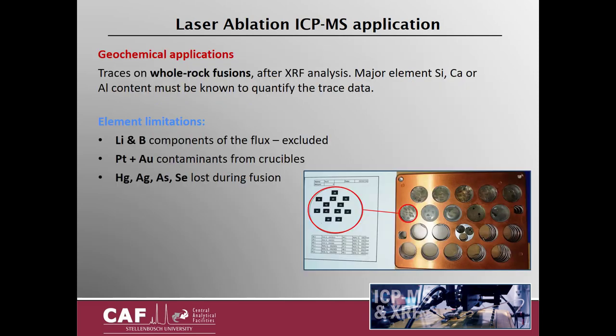Looking at geochemical applications, we did trace analysis on whole rock fusions after majors was measured by XRF. The silica, calcium, or aluminium content is used as internal standards to quantify the data. Samples are prepared by crushing the XRF fusions into chips. We mount up to 15 pieces from different samples into a 2.5 cm resin disc and then polish the sample surface. A mount map is created for each resin disc so that we can identify the samples once it is mounted in the laser sample holder.